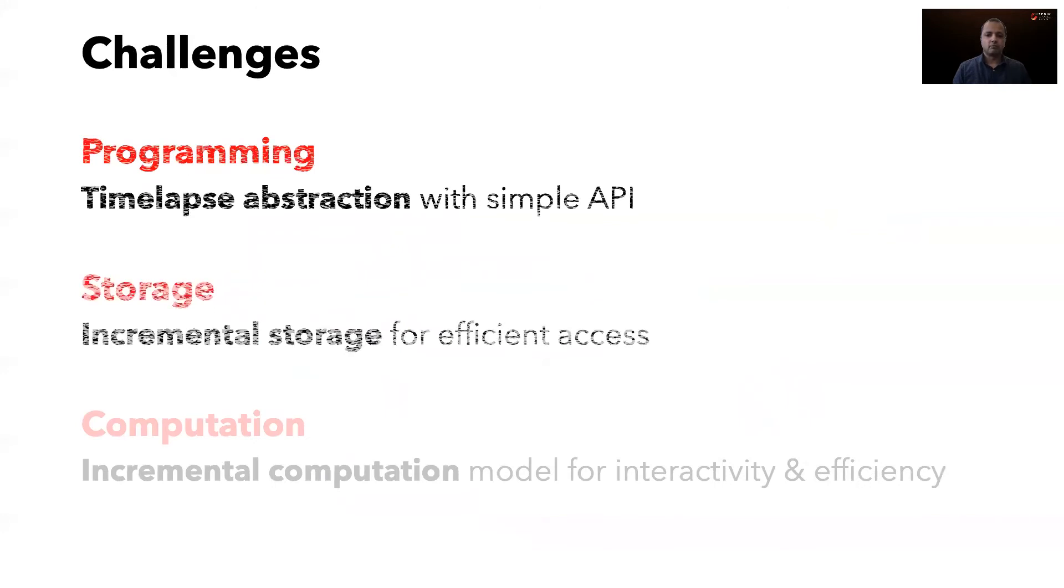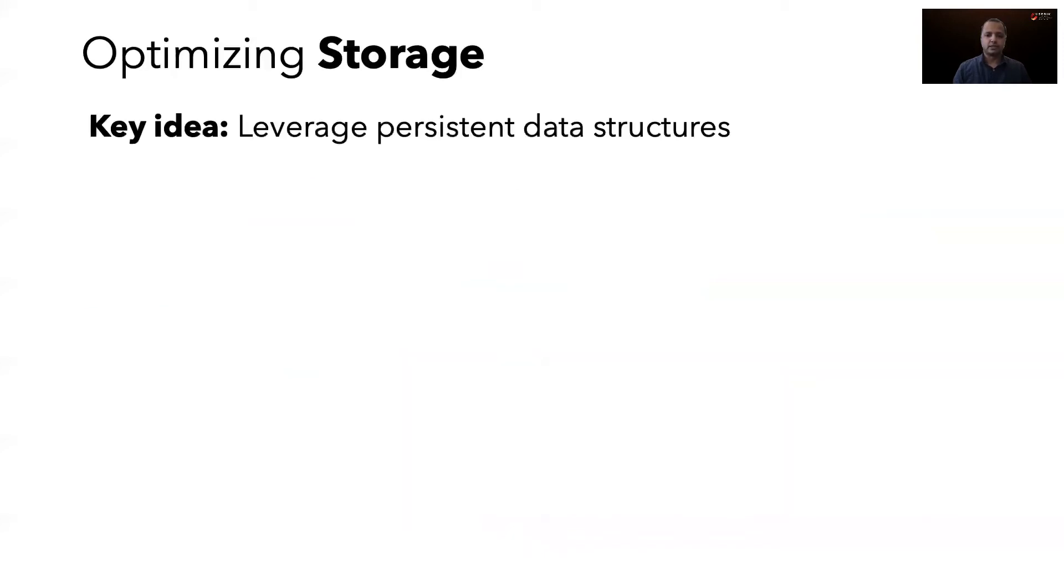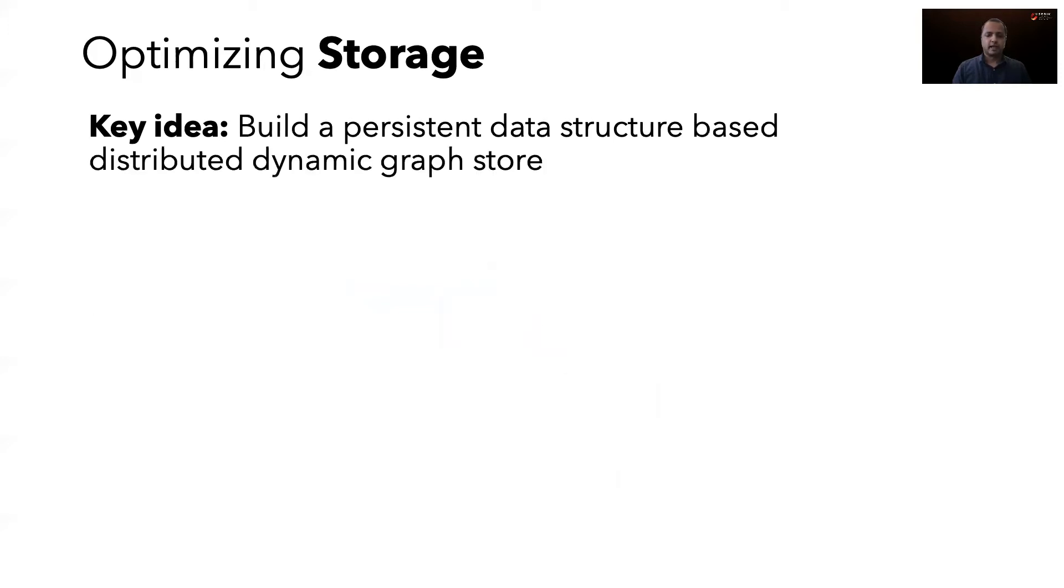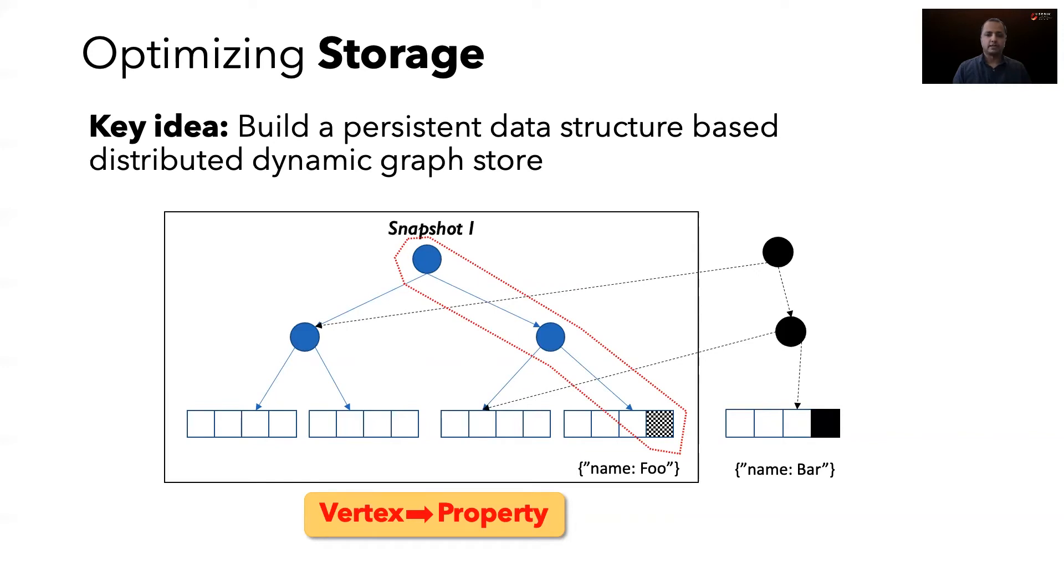Tegra solves the storage problem by proposing an incremental store that reduces storage overhead while providing efficient access. The key idea is to use persistent data structures, which retain previous versions upon modification. In Tegra, we use a persistent version of the adaptive radix tree to build a distributed dynamic graph store. For example, a vertex tree stores the mapping between the vertex and its properties. Traversing the tree using the vertex ID retrieves the property. When a vertex is modified, path copying is used to provide persistence, so we only need to copy the leaf node storing the vertex and its parents. Traversing the tree from the first root provides all vertices in snapshot i, and traversing the second root provides all vertices in snapshot j.